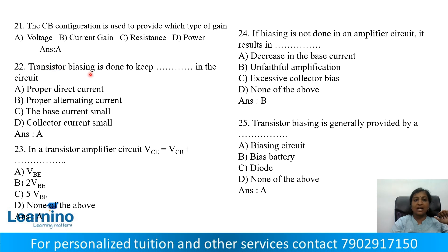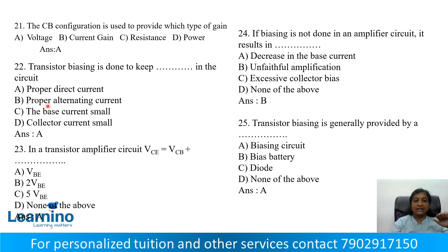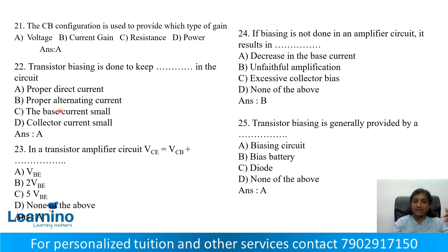Question number 22: Transistor biasing is done to keep dash in the circuit. Options: A — Proper direct current, B — Proper alternating current, C — Base current small, D — Collector current. Correct answer is Option A: Proper direct current.